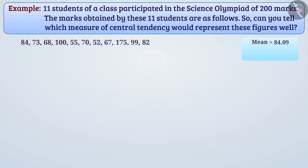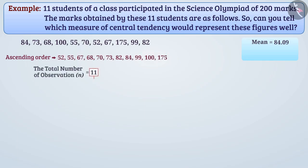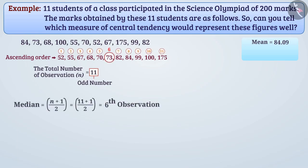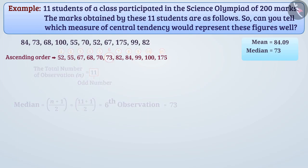Now to find the median, we will arrange the data in ascending order. The total number of observations here is 11, which is an odd number. Therefore, median is the 6th observation, which is 73. Each observation occurs only once in the group of data shown. Therefore, each observation of the group of data is mode.